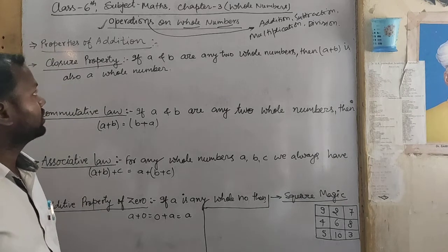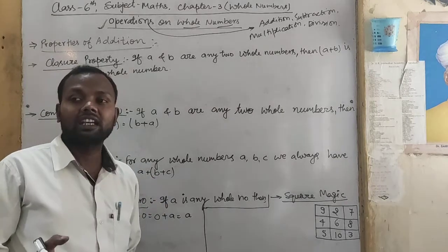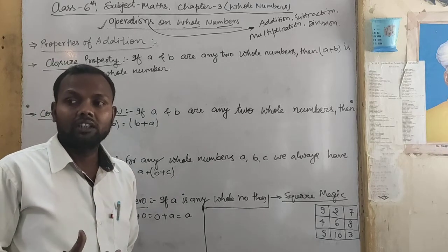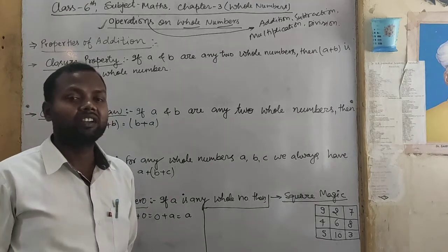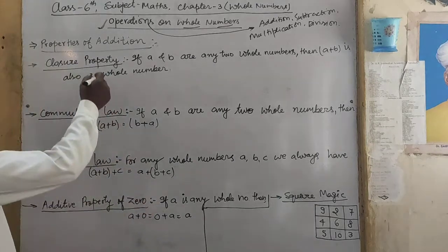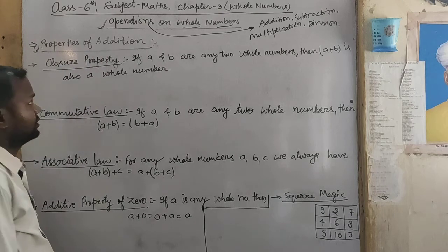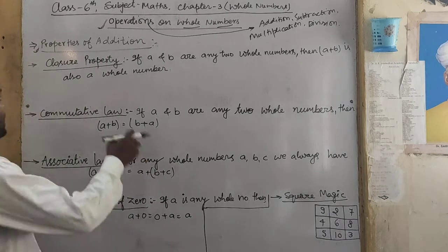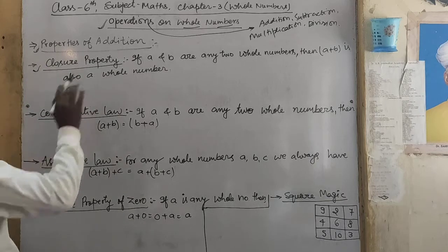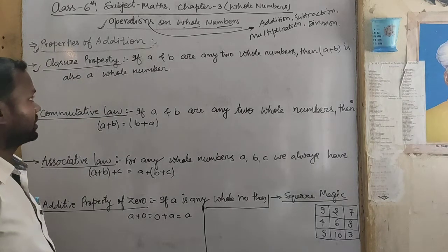So for addition, there will be some properties and some rules. Let's see what are the rules of addition — the properties of addition. The first one is Closure Property.